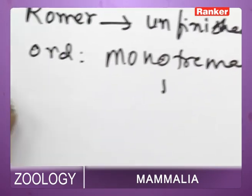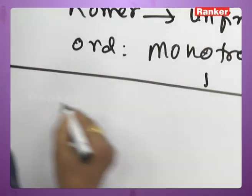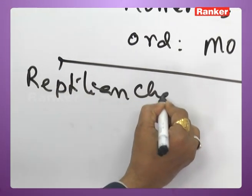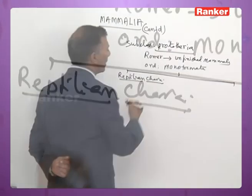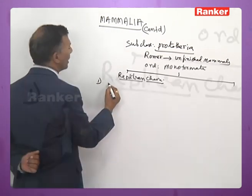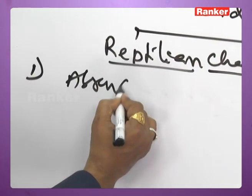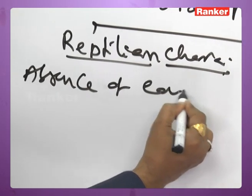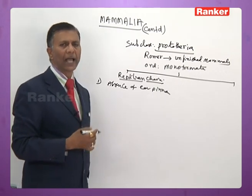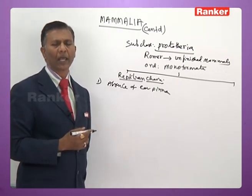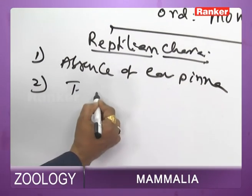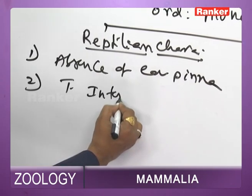The reptilian characters of Prototheria are: (1) Absence of ear pinna — unlike other mammals, ear pinna is absent, as in reptiles. (2) A T-shaped interclavicle is present in the pectoral girdle, as in reptiles.